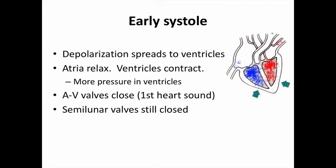We then enter the period of isovolumetric contraction. With both the AV valves and the semilunar valves closed, and the ventricles squeezing, the blood volume inside remains the same — that's what isovolumetric means. This is why tight valve closure matters: if the mitral valve, the most commonly problematic valve, has a gap, blood leaks back into the atria during contraction, causing a host of issues we'll cover when discussing valve disease.